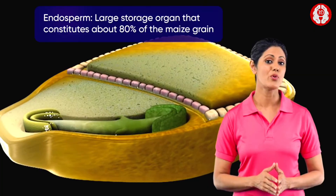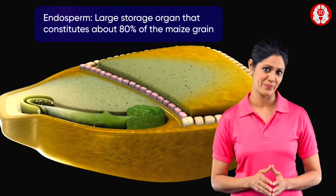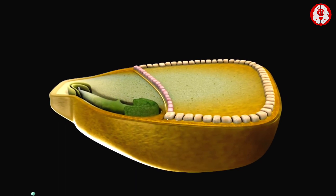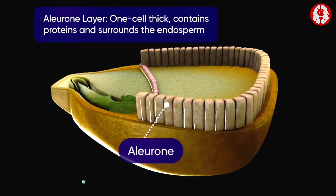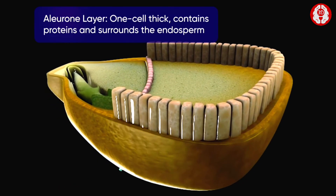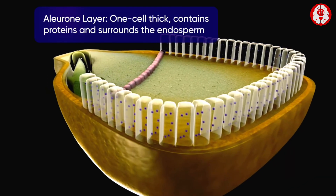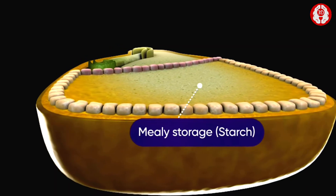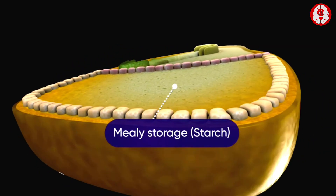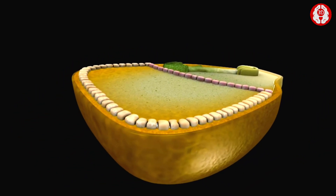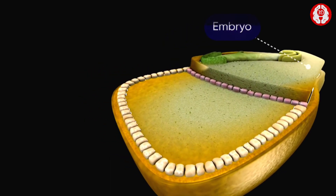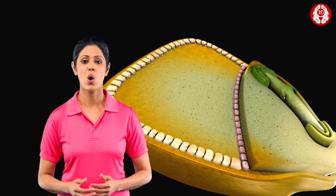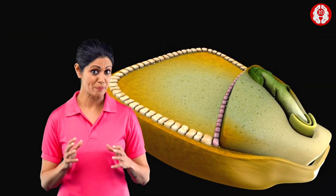The endosperm is located at the broader end of the maize grain. Beneath the hull, there is a continuous layer called the aleurone layer, which contains large cubicle cells containing proteins. The rest of the endosperm consists of starch-laden cells which also contain some lipid.